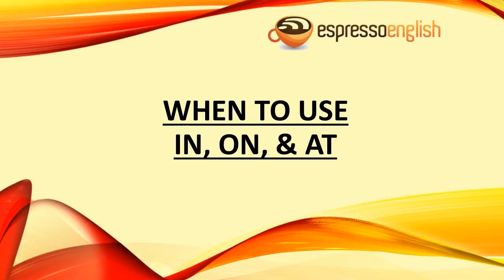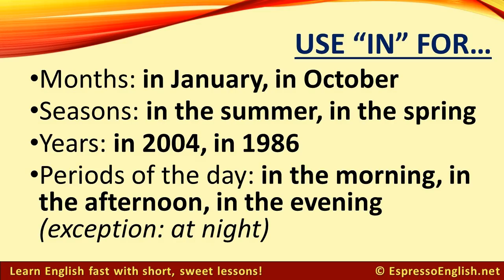When to use in, on, and at, from EspressoEnglish.net. Use in for months: in January, in October. Use in for seasons: in the summer, in the spring. Use in for years: in 2004, in 1986.